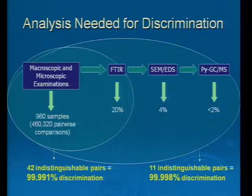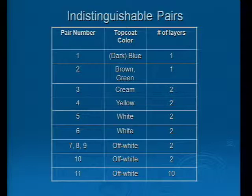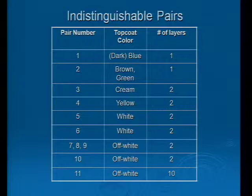What were those indistinguishable pairs? There were two that were single layer pairs — one was a dark blue. One pair had one sample originally assessed as having a brown top coat and one with a green top coat; the colors were quite light, and when you put them together the colors were quite close. Most of the samples were two-layer systems. There was one that was a 10-layer system. In the pair numbers you'll see three pairs listed as 7, 8, 9 — those were three samples that formed three pairs. So of the 11 indistinguishable pairs, three are within that listing of off-white two-layer samples.